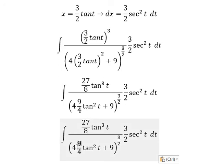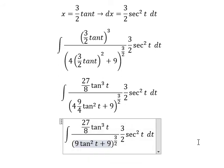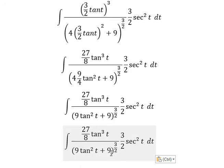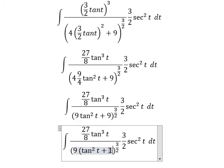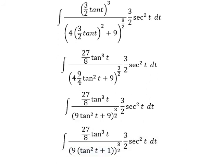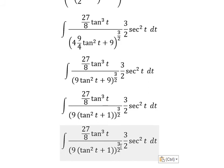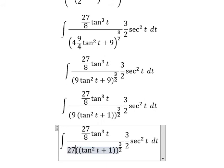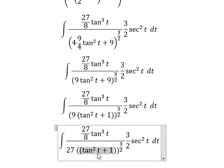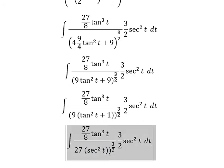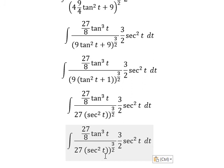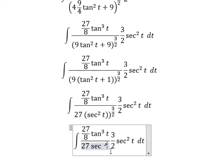We simplify number 4 and number 4. Number 9 and number 9 — we do factorization. 9 to the power of 3 over 2 gives us 27. Then tan t squared plus 1 becomes secant of t squared, and secant of t squared to the power of 3 over 2 gives secant of t to the power of 3.